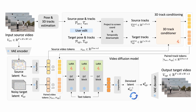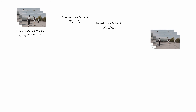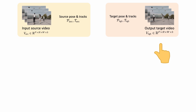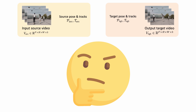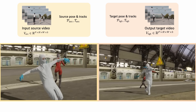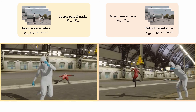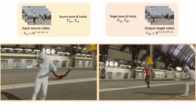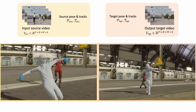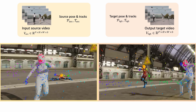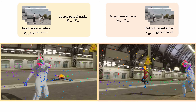Now we have the model, but the real challenge is about getting the training data. To train this model, we need the source input video, source and target camera poses and tracks, and the output target video. How do we get such data? We first leverage synthetic data. We generate random scenes in Blender and place a variety of characters who move around the environment and do silly dances. As this is fully synthetic, we have the ground truth RGB videos and the corresponding 3D track pairs.